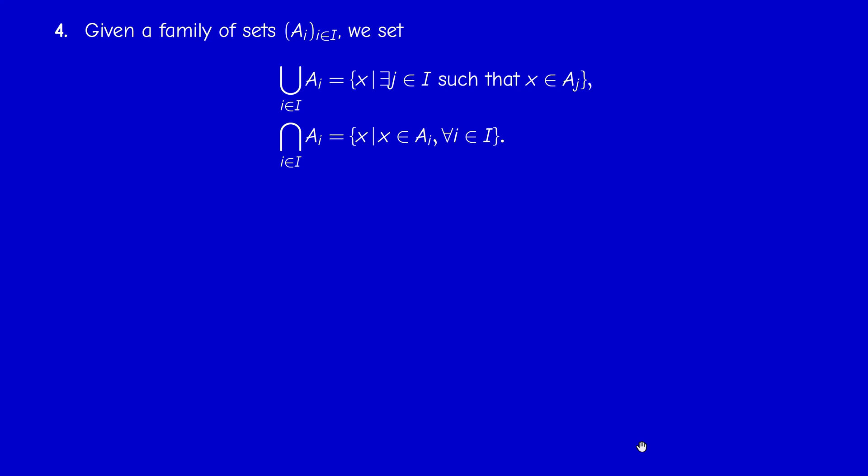Union of a collection of sets or family of sets - we have an indexed collection here. The union is the set of elements that belong to at least one of these sets. The intersection is the set of X that belong to all the sets in the collection. We have the very important De Morgan's law. The complement of the union is the intersection of the complements and vice versa. The complement of the intersection is the union of the complements.